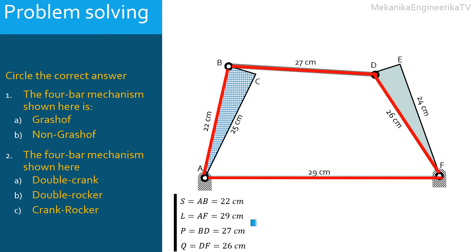Thus, the shortest link and longest link together make 51 centimeters. And the sum of the lengths of the two other links is 53 centimeters. The sum of lengths of the shortest and longest links is lower than the sum of lengths of the two other links.